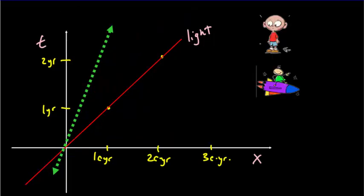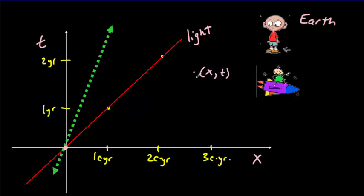Let's introduce some observers to our graph. We'll have an observer on Earth who measures all positions relative to x equal to zero. Any event has a position and a time: we read off the position by dropping a vertical line down and read off the time by drawing a horizontal line across.